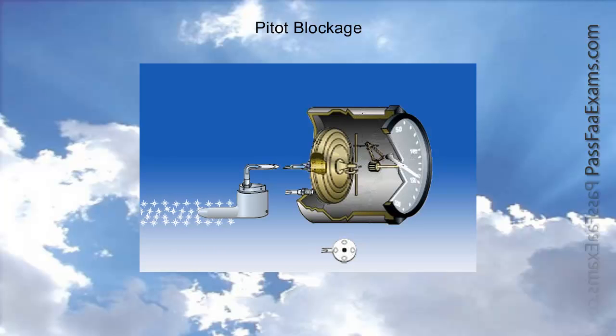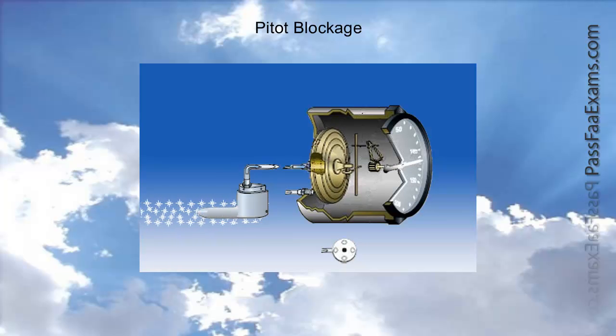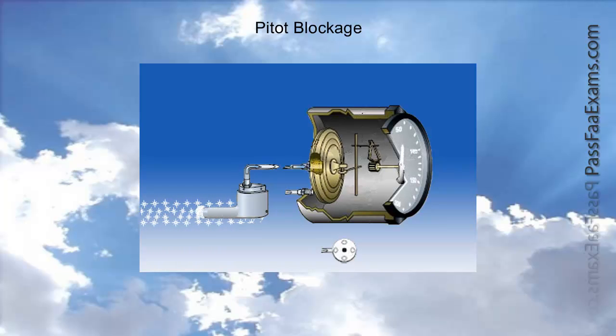as the snow starts to accumulate on the pitot tube, the opening starts to freeze over. As this is happening, the impact air inflating the diaphragm starts to bleed out from the drain hole. And the indicated airspeed starts to drop until the impact air entry is fully clogged. At which point, the indicated airspeed will drop to zero. Keep in mind that the aneroid wafer still holds the outside pressure inside of it. But this is equal to the pressure inside the chamber of the instrument. Therefore, the reading of the airspeed indicator does drop to zero. On the next slide, you will understand better this latest pressure concept.